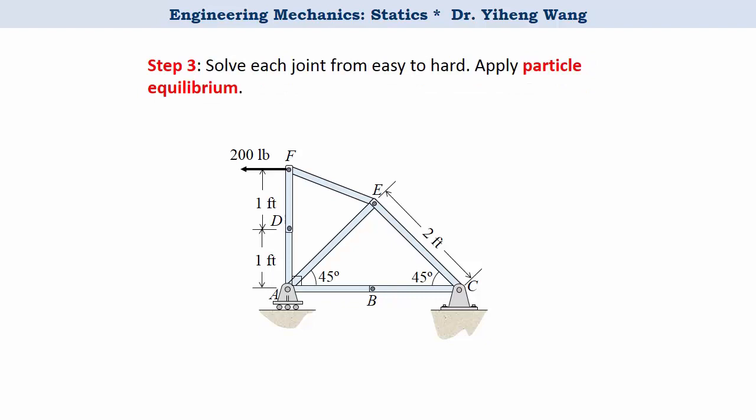Now step three, we can start solving for the forces one by one. Before we do that we still need to figure out some dimensions and angles. Since this is an isosceles right triangle, this one must also be an isosceles triangle, and therefore the angles can be determined.